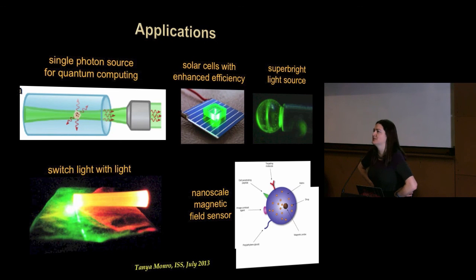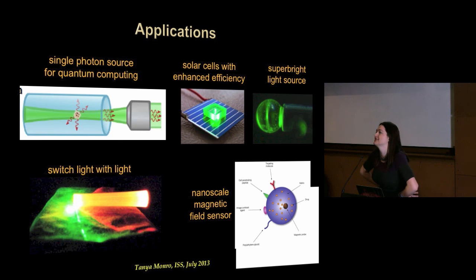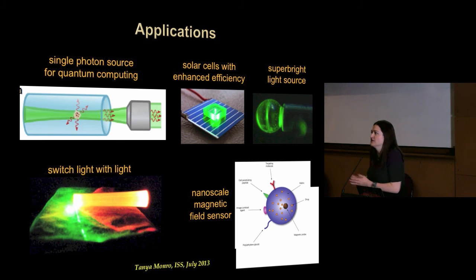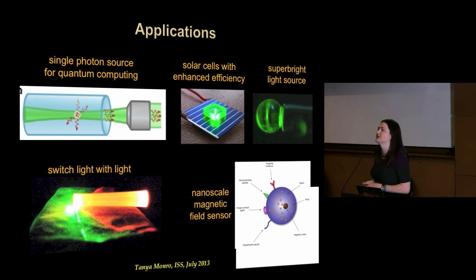One of the clever games you play is time gating. We know something about the temporal characteristics of the emission from nanodiamond, and we know it's different from the temporal characteristics of light in the glass. That's where you use clever electronics to gate or filter out signals that are not from the diamond.